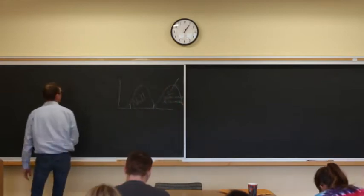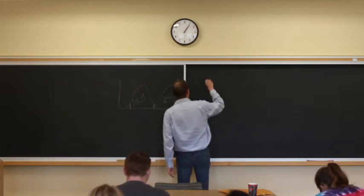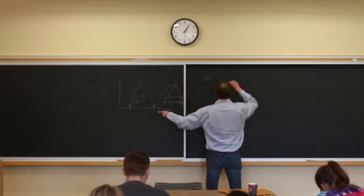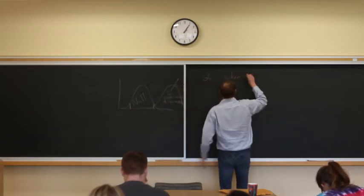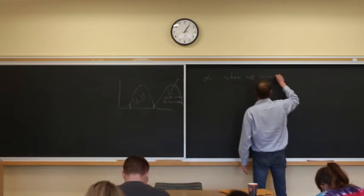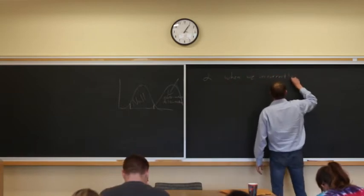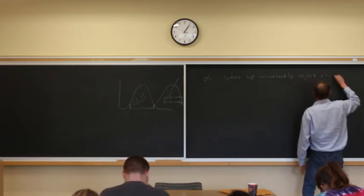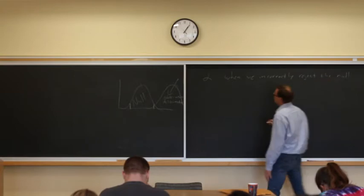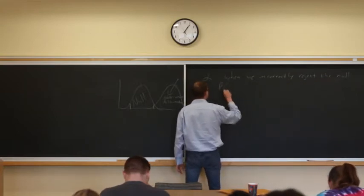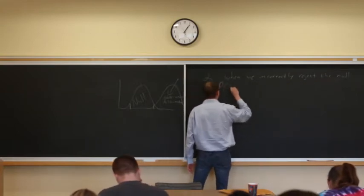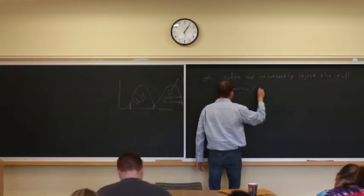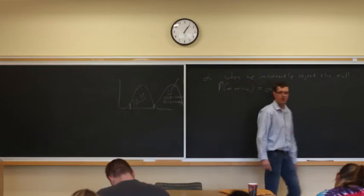We can make a couple different types of errors. An alpha error occurs when we incorrectly reject the null. And the probability of an alpha error - P represents probability - of an alpha error is just whatever alpha value that people set.